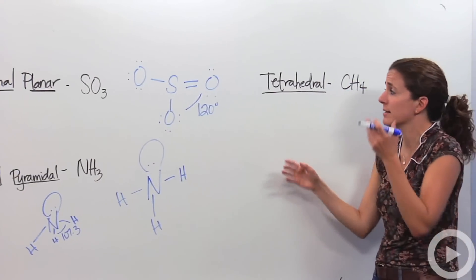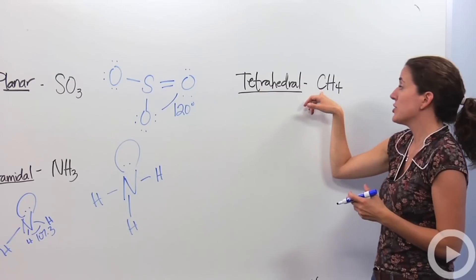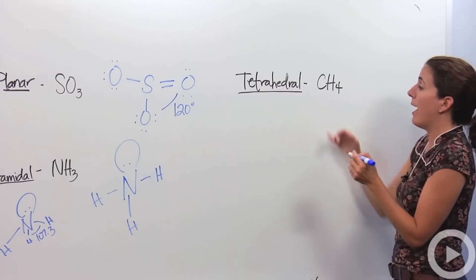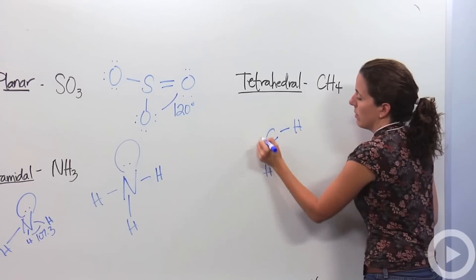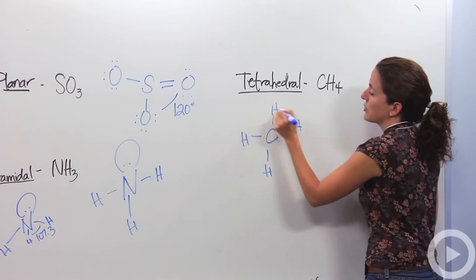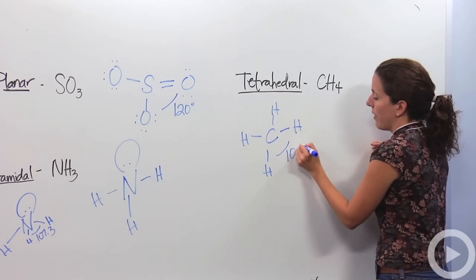The last one you're probably going to see in class is going to be tetrahedral. Tetra, don't forget, is a prefix for four. So you have a central atom with four atoms around it. So we have carbon with four hydrogens around it. These guys are going to be equally spaced out. The angle is going to be 109.5.